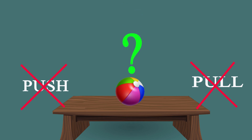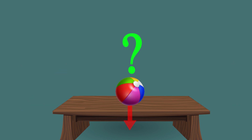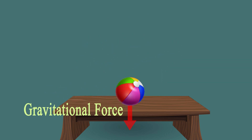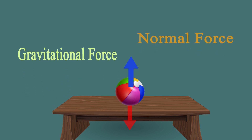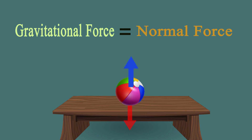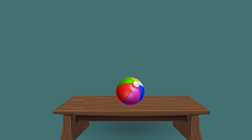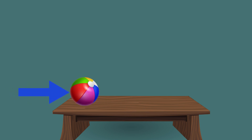There is a table and we keep a ball on it. If you don't push or pull the ball, do you think the ball will move? Not really — the ball will not move. But why? Because there is a gravitational force acting downward, and the surface is also giving a force opposite to the gravitational force, called the normal force. These two forces are equal, so the ball will not move.